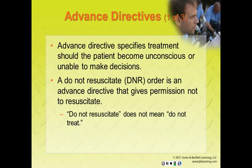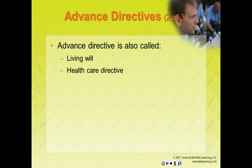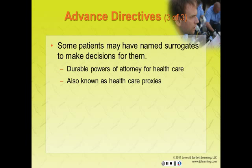Do not resuscitate does not mean do not treat. Even in the presence of a DNR order, you are still obligated to provide supportive measures like oxygen, pain relief, and comfort care to a patient who is not in cardiac arrest. A competent patient makes his or her own decisions, and an advanced directive specifies treatment should the patient become unconscious. An advanced directive may also be referred to as a living will or health care directive. Some patients may name surrogates or have a durable power of attorney for health care, also known as a health care proxy.